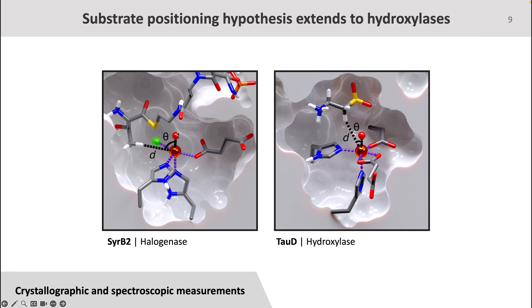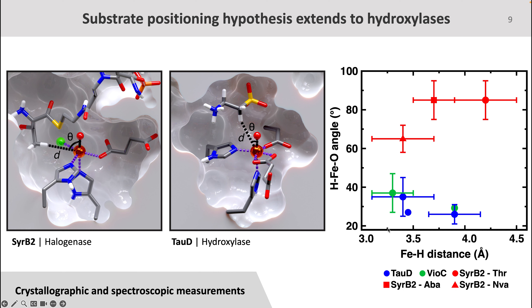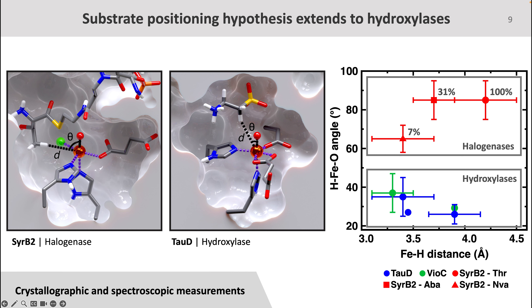If we zoom in on the active site of SyrB2, this is what the angle looks like. And if we zoom in on the active site of TauD, this is what the angle looks like. You can see that the SyrB2 angle looks notably more obtuse than the angle on TauD. We next wanted to see if this difference was also observable across other crystal structures and NMR measurements, which we did by looking at the literature. We found that there did seem to be a trend among hydroxylases and halogenases, and you can see it here in this plot. On the x-axis we have the distance between the iron center and the hydrogen target, and on the y-axis we have the angle that forms between the hydrogen target, the iron center, and the reactive oxo.